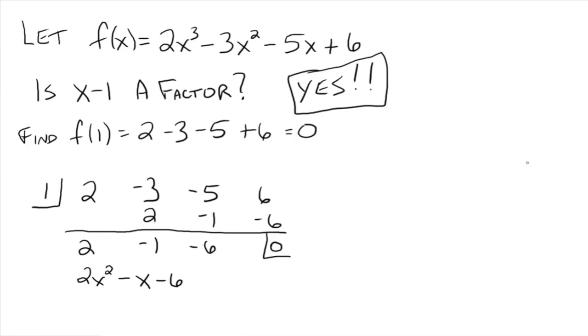So really what we have now is f(x) has been factored into x minus 1 times 2x² - x - 6. Everybody see that? If you take this quotient and multiply it times x minus 1, the divisor there, you're going to get back your f(x), 2x³ - 3x² - 5x + 6.